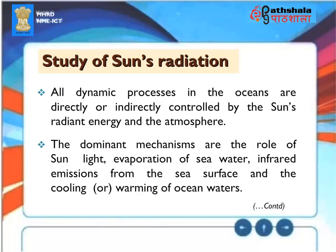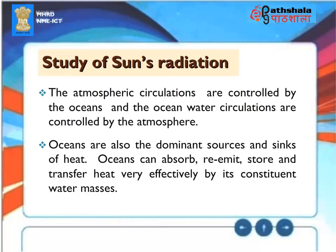Study of Sun's Radiation. All dynamic processes in the oceans are directly or indirectly controlled by the sun's radiant energy and the atmosphere. The dominant mechanisms are the role of sunlight, evaporation of seawater, infrared emissions from the sea surface, and the cooling or warming of ocean waters. The atmospheric circulations are controlled by the oceans, and the ocean water circulations are controlled by the atmosphere. Oceans are also the dominant sources and sinks of heat. Oceans can absorb, re-emit, store, and transfer heat very effectively by their constituent water masses.